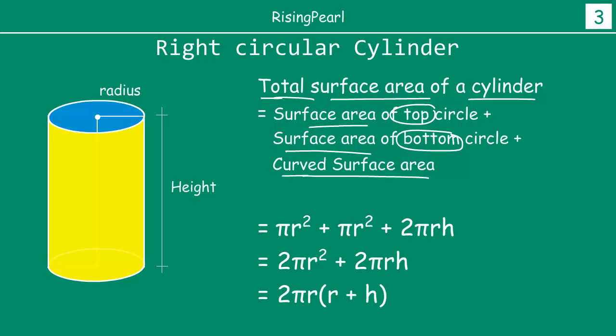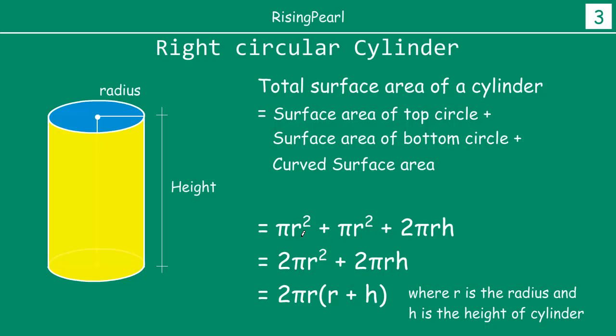Which will be equal to pi R square plus pi R square, top circle plus bottom circle, plus the curved surface area. Pi R square plus pi R square is 2 pi R square plus 2 pi R H.